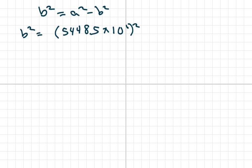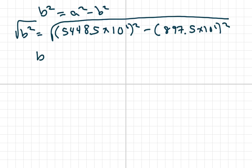So we're going to use our equation for ellipses that B squared equals A squared minus C squared. So we get B squared equals 5,448.5 times 10 to the sixth squared, minus 897.5 times 10 to the sixth squared. And when you clean all that up, you take the square root, just go ahead and use your calculator. We're going to get B equals 5,374.07 times 10 to the sixth.